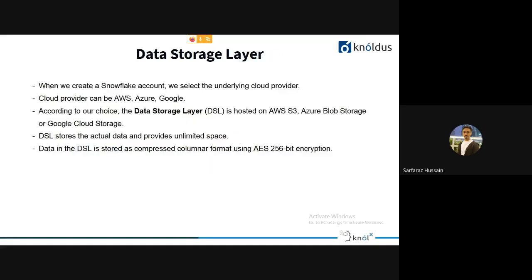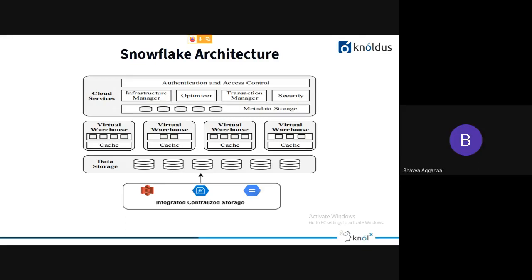One interesting aspect of this architecture is that the data storage layer is separate from the compute layer — your virtual warehouses. This means you can scale storage and computing power independently of each other, which is a big advantage. Traditional data warehouses required vertical scaling; here you get horizontal scaling.